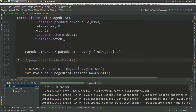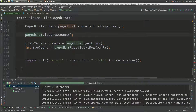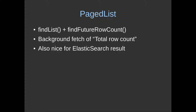Generally the idea with page list is that you call load row count so the row count query can be executed in parallel. If that row count query is relatively expensive, that's quite a good thing to do. Page list is a wrapper — a nicer way of doing find list plus find future row count, executing the total row count in the background. It also works nicely with Elasticsearch, which returns the total row count and the list in the same response. That's it — thank you.